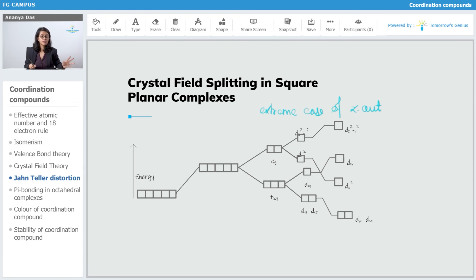Now, next thing what happens is the dx²-y² gets higher in energy whereas the dz², it gets lower in energy than the dxy. The dxy comes higher energy, then the dz² at bottom, we have dyz and dzx.